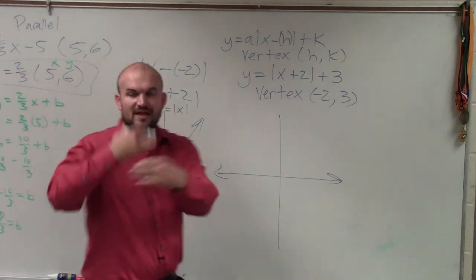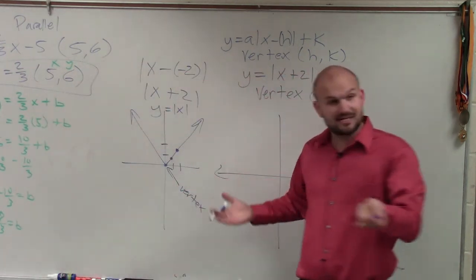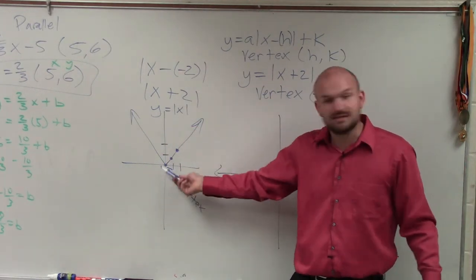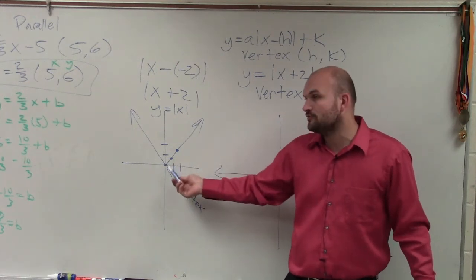And if I was to reflect that over the x-axis, it would be the maximum point. But you guys can see, this is the lowest point on the graph. Remember when we did the domain and range? Right? That's the minimum point. That's what we call the vertex.